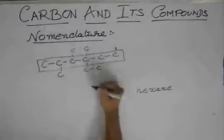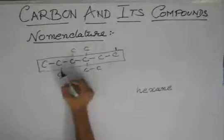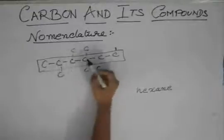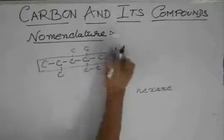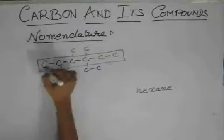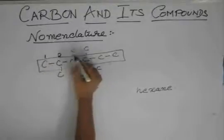If we start numbering from this side, we have 2 plus 3, 5, plus 4, 9, plus 4, 13. Obviously, 13 is lower than 15. So we will have to start numbering from this side.